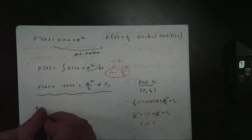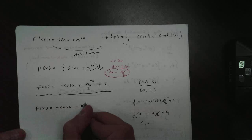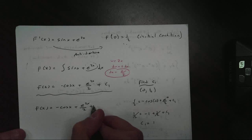And I just plug that back in. f of x equals negative cosine of x, plus e to the 2x, over 2, plus 1. And there's my answer.